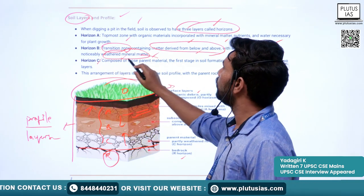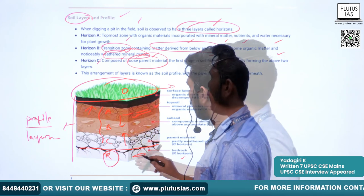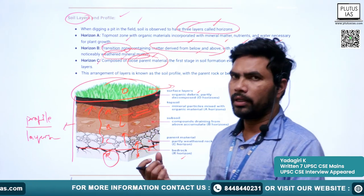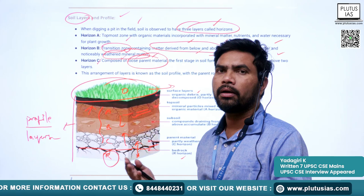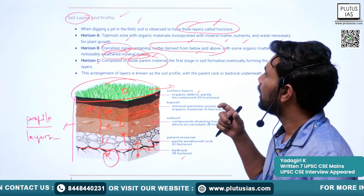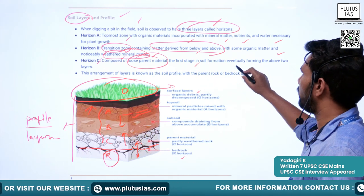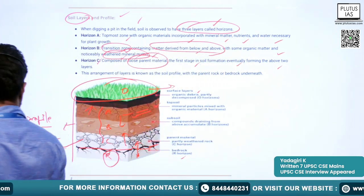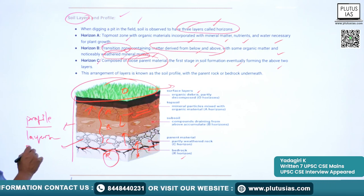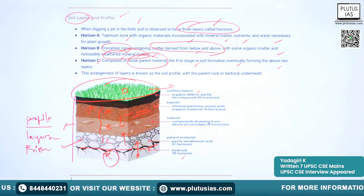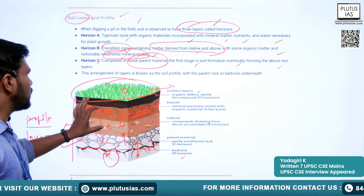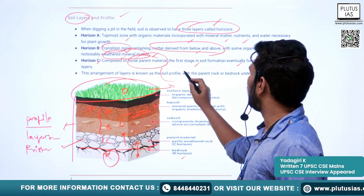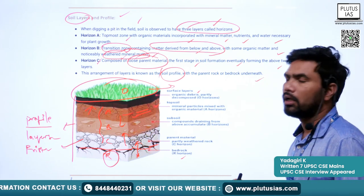Horizon C is composed of loose parent material — the debris of the parent rock formed due to weathering processes. It is the first stage of soil formation, on which the above two layers will eventually be formed. This arrangement of layers with the parent rock or bedrock underneath is known as the soil profile.